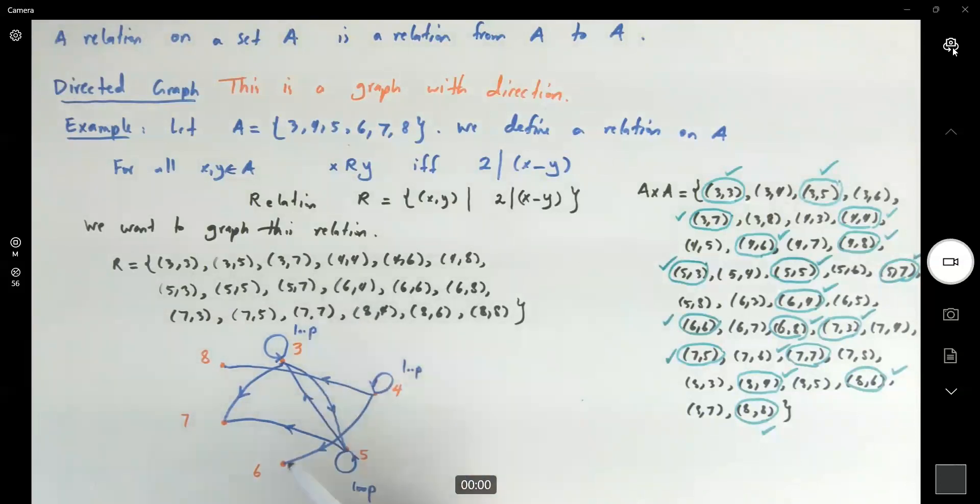6 and 4, from 6 to 4, you already had one directed line, now it's going to be in the opposite direction. 6 and 6, you're going to have a loop on 6. 6 to 8. 7 to 3, you already had 3 to 7, now 7 to 3. 7 to 5, we had 5 to 7, now 7 to 5 go in the opposite direction. 7 to 7, you're going to have a loop on 7.